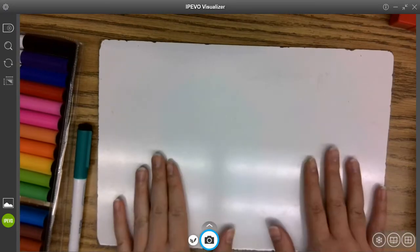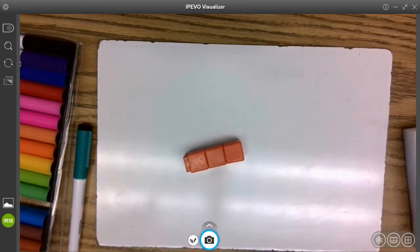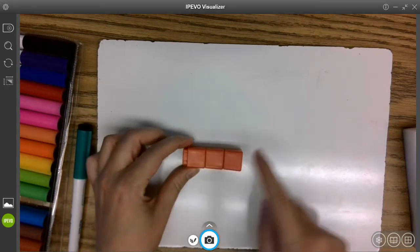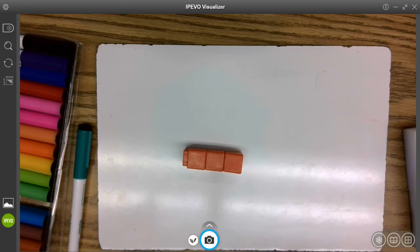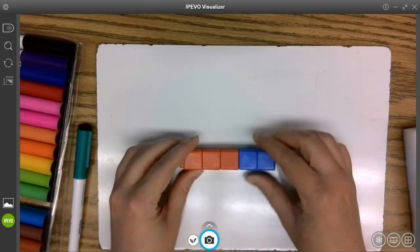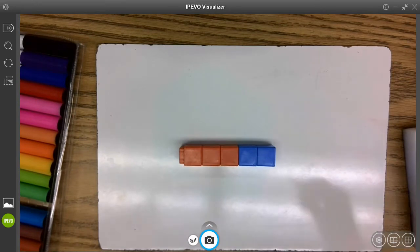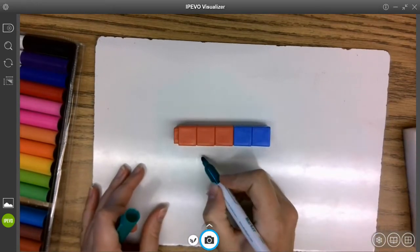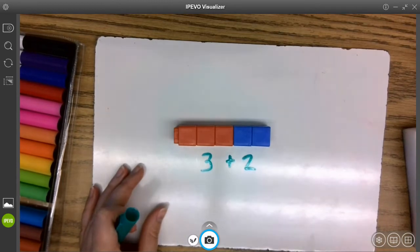Okay, so if I am sitting here and I have three cubes, one, two, three, and I decide I want to add two more cubes, one, two, I could write it as a number sentence. Three plus two.